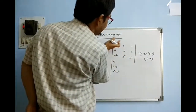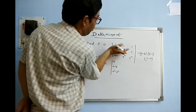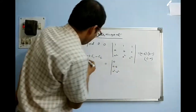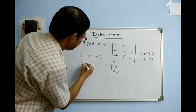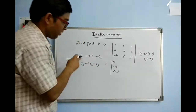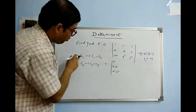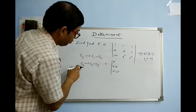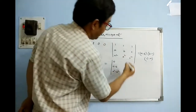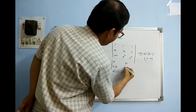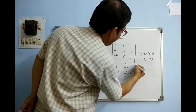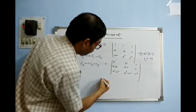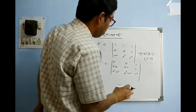At C2, perform C2 minus C3. Make a habit of writing: where do you want to bring the change and what change. Starting at C1 write C1 minus C2, not C2 minus C1; starting at C2 write C2 minus C3. So the result is: column 1 gives 0, a−b, a²−b²; column 2 gives 0, b−c, b²−c²; column 3 remains 1, c, c². Now we have two zeros, so we can take things common from any row or column.